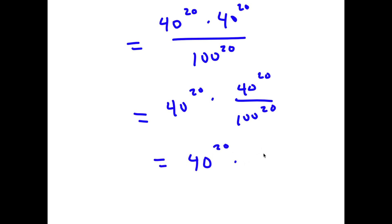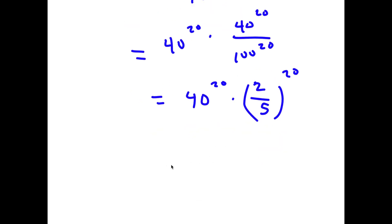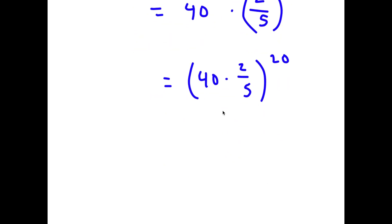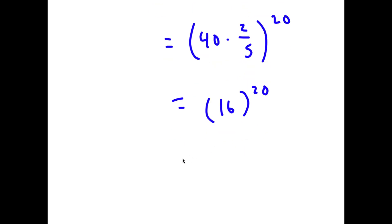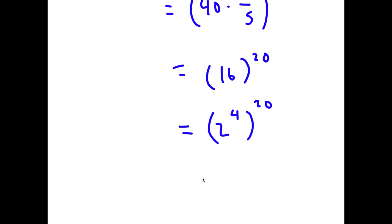This gives 40 times 40 times 2 over 5 to the power of 20, which is equal to 40 times 40 times 40 times 2 over 5. Now 40 times 2 is 80, and 80 divided by 5 is 16. So I have 16 to the power of 20, which is equal to 2 to the power of 4 to the power of 20, which is equal to 2 to the power of 80. So that is my second method.